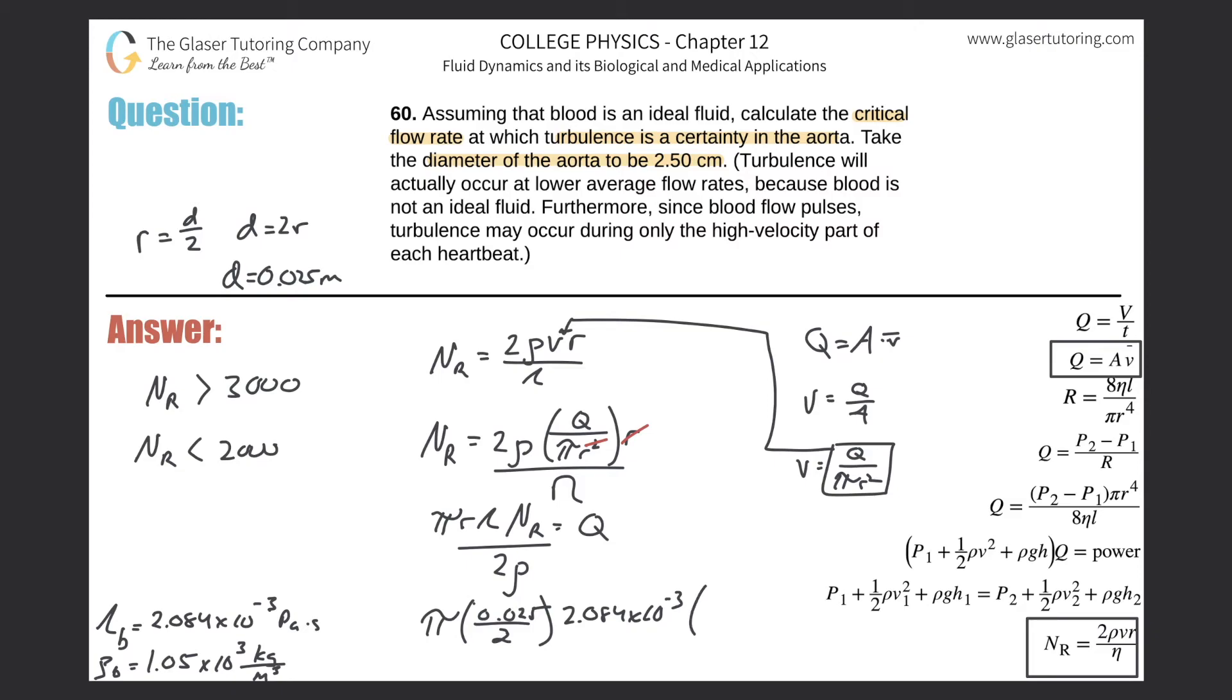The Reynolds number—calculate the critical flow rate at which turbulence is a certainty. We're assuming turbulence is certain at 3,000, so plug in 3,000 for the Reynolds number. Then divide by 2 multiplied by the density, 1.05 times 10³. This will be the flow rate.